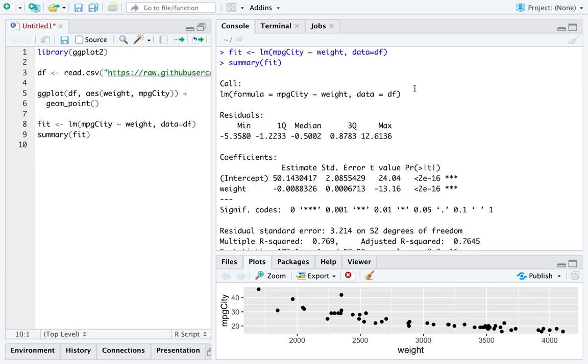The summary call to the object fit reminds you how you called LM in the first place. It presents for you a reasonable quick analysis of the residuals from this fitted model. You can use these numbers to help you determine the approximate normality of the residuals.